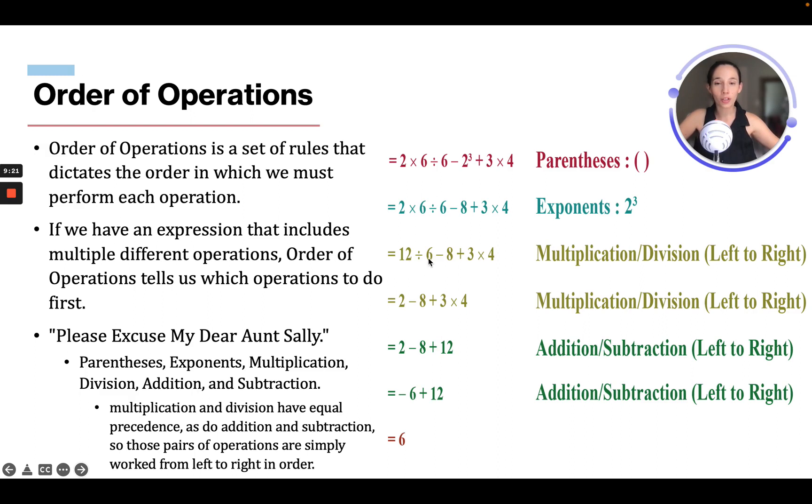Now we work from left to right. So the next thing we're going to do is the multiplication. So now we get 12. Then we're going to do the division. We get 2. Then we're going to go over here and do the multiplication, because that all has to be done before we add and subtract.